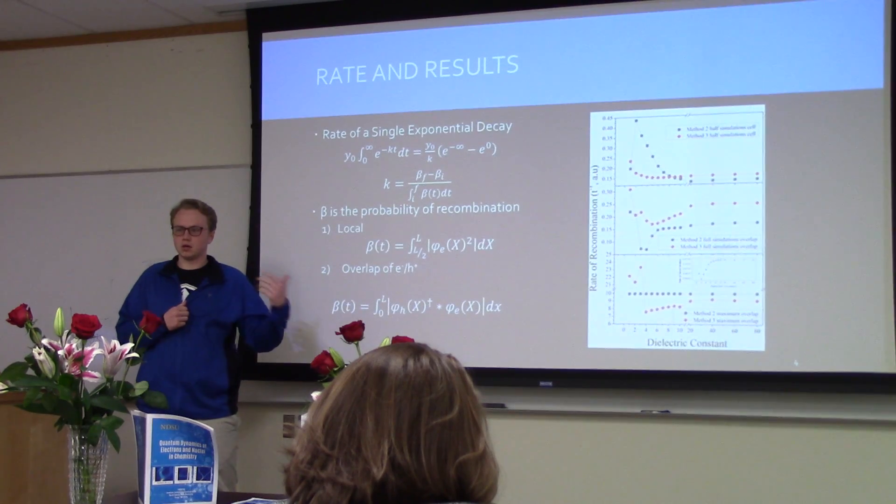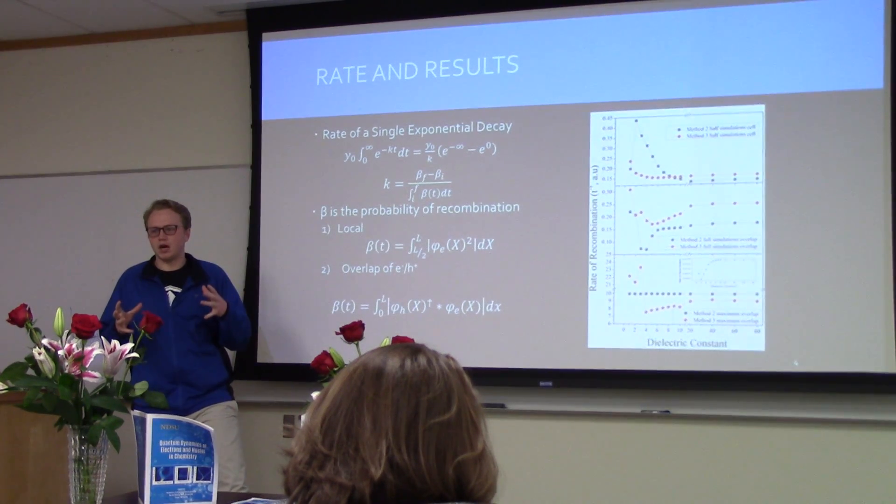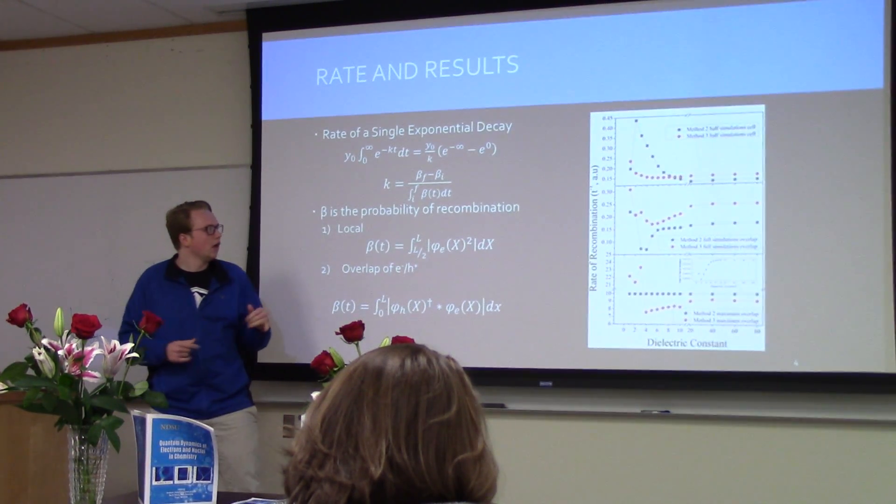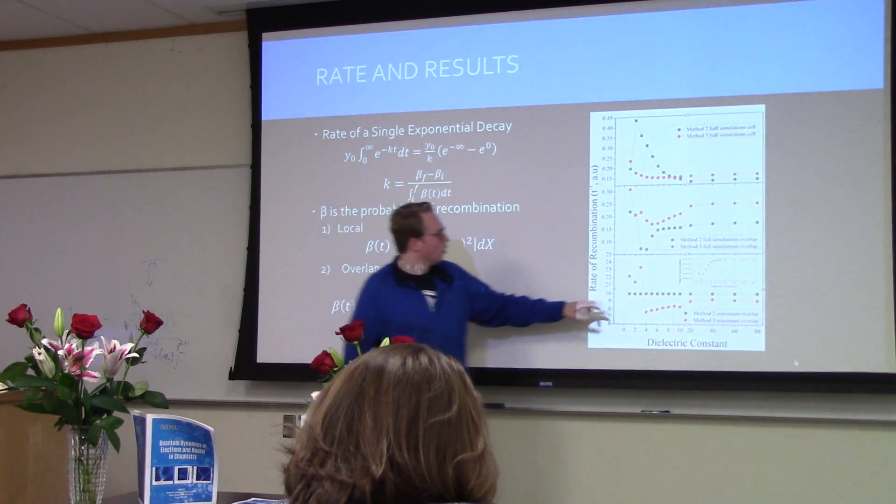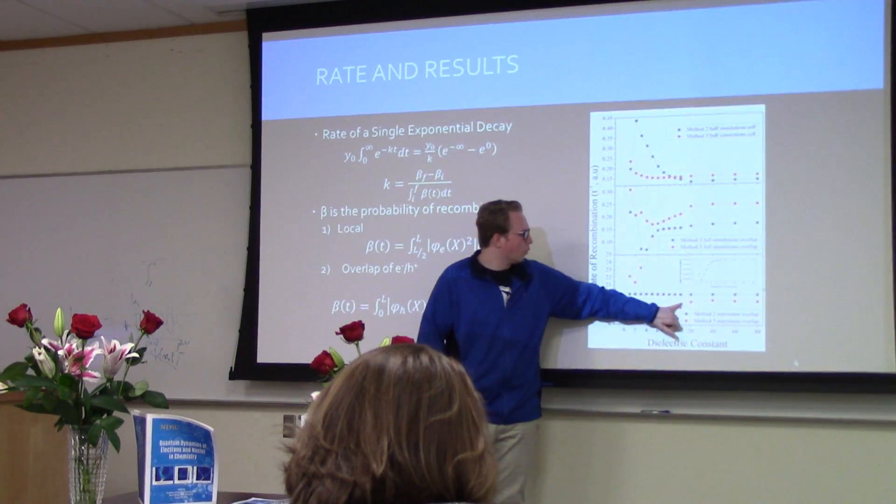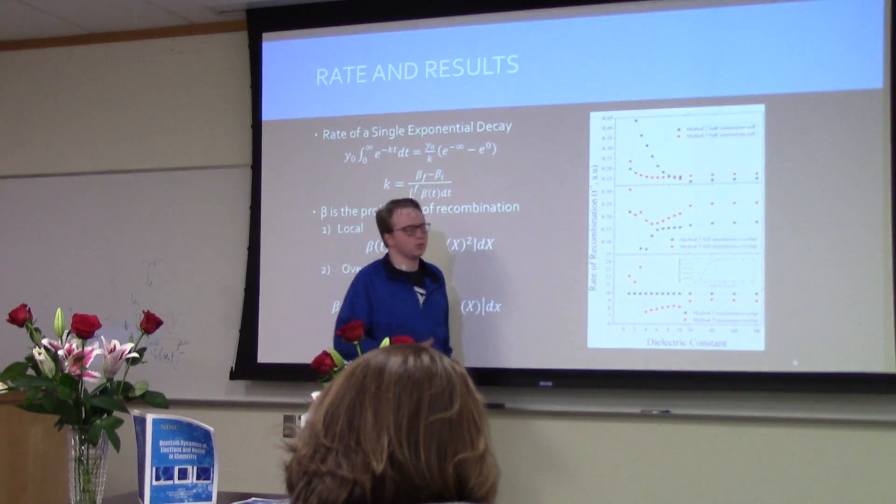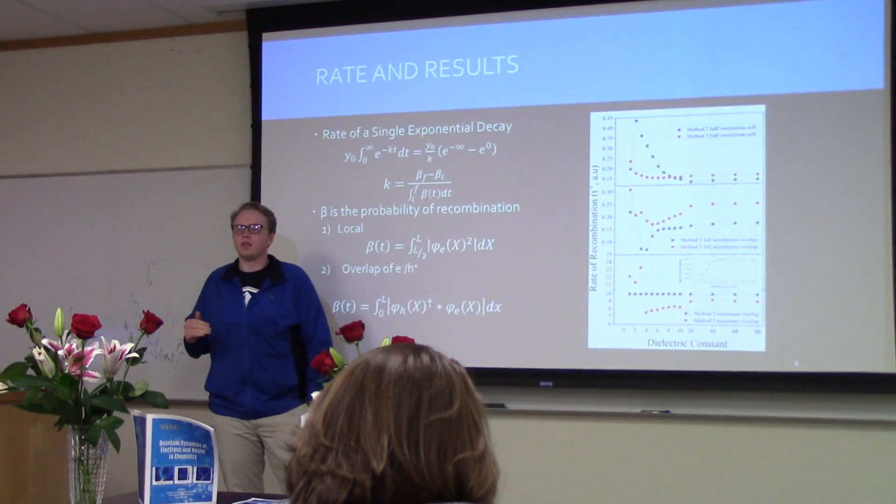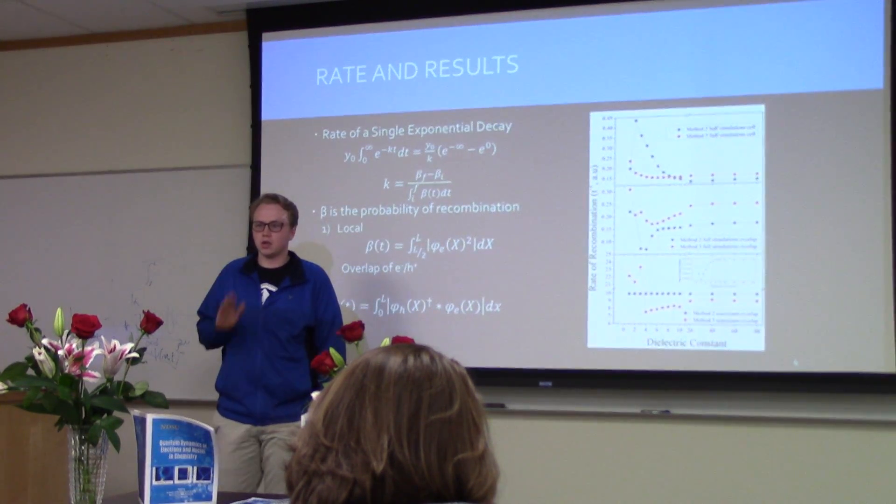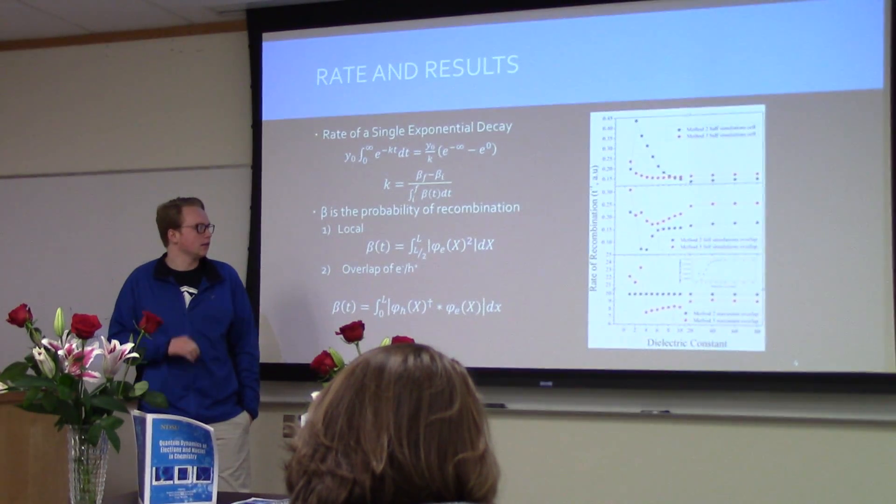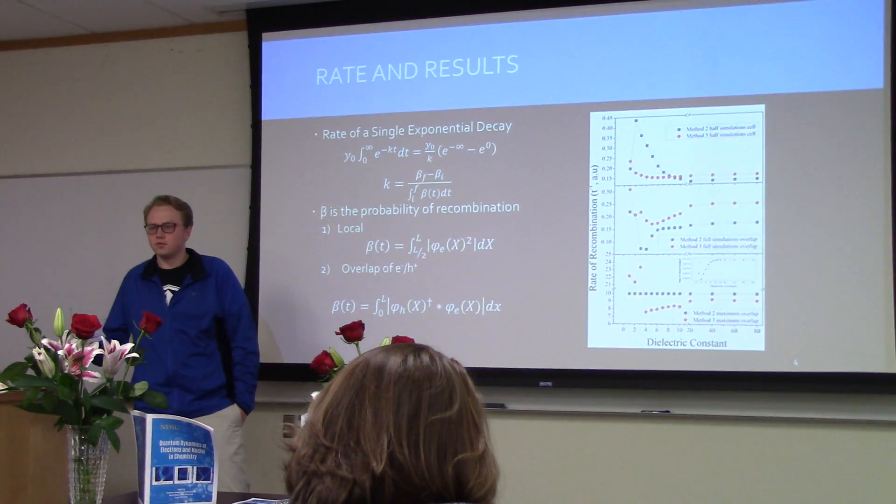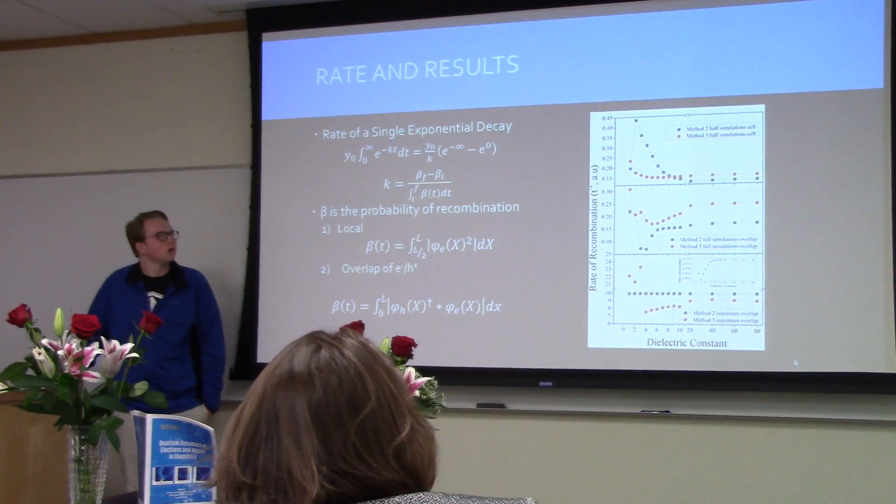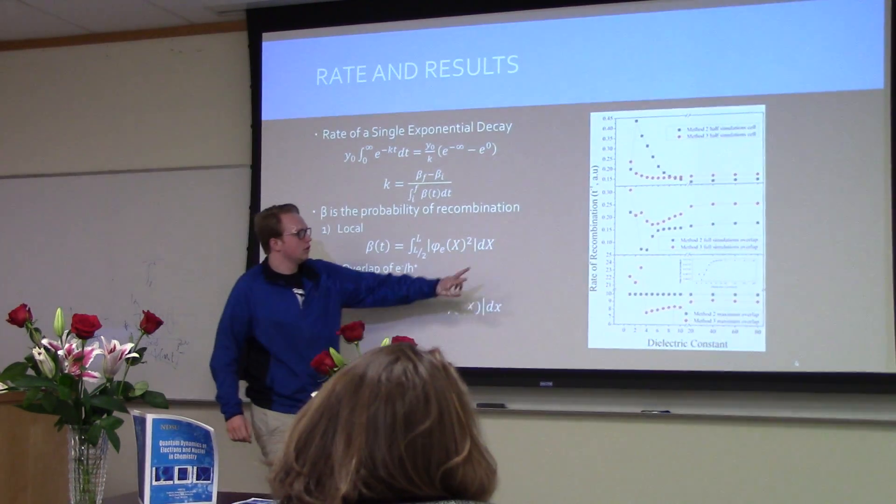Most of our data would support the idea that when you have dielectric constants between three and ten, the rate of recombination is the lowest, which would indicate that that would improve the efficiency of the cell.